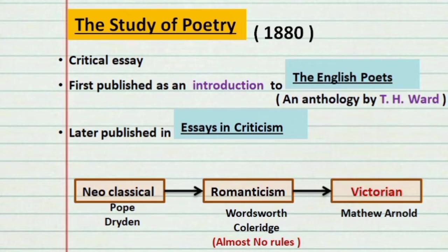After some time, things got to the point where almost anyone could write a poem and there was no more pleasure in reading poetry. It was during this Victorian period that Arnold started writing. He felt it was necessary to put forward some rules or guidelines for the poets as well as the critics, so that the standards of poetry could be raised.